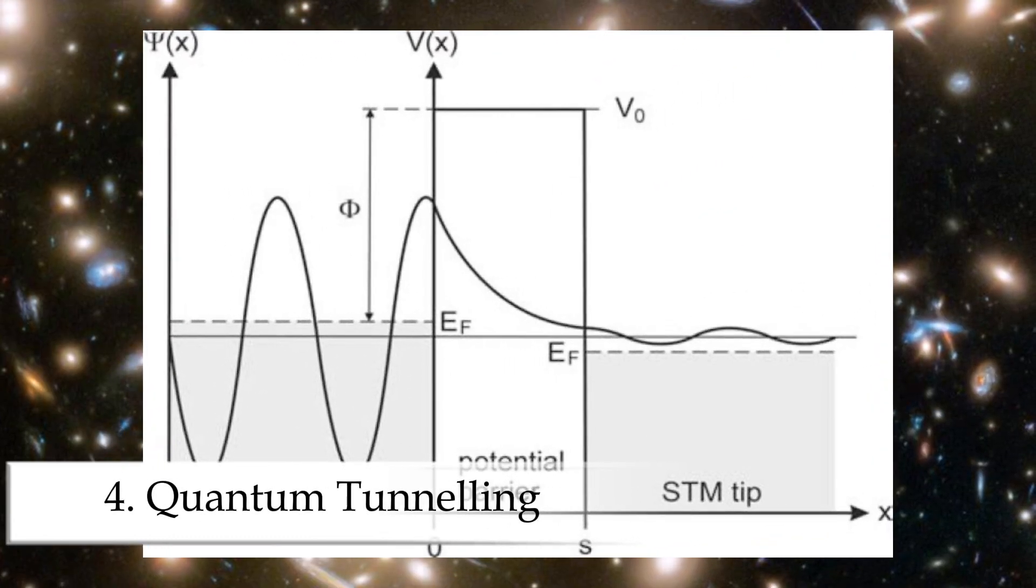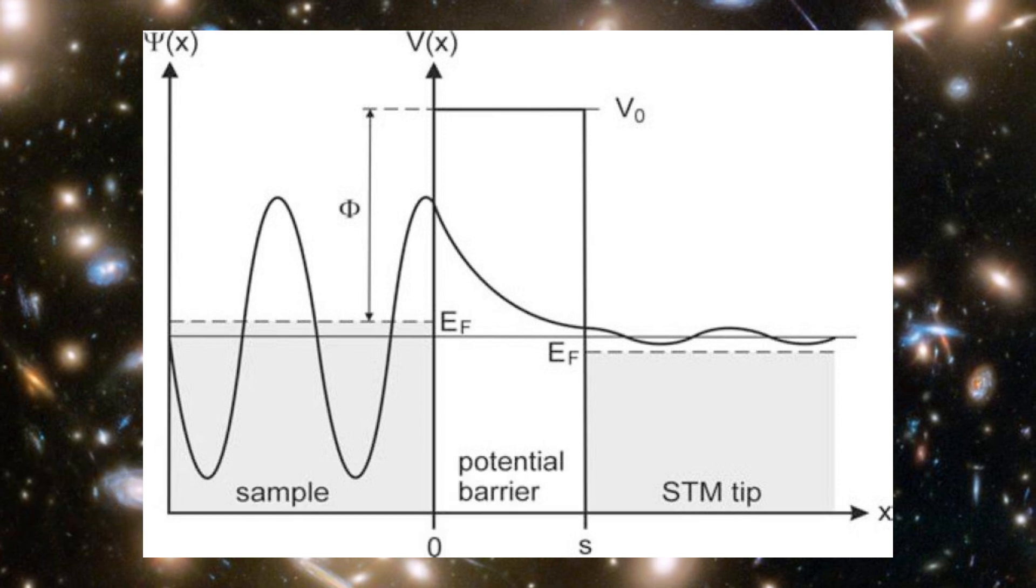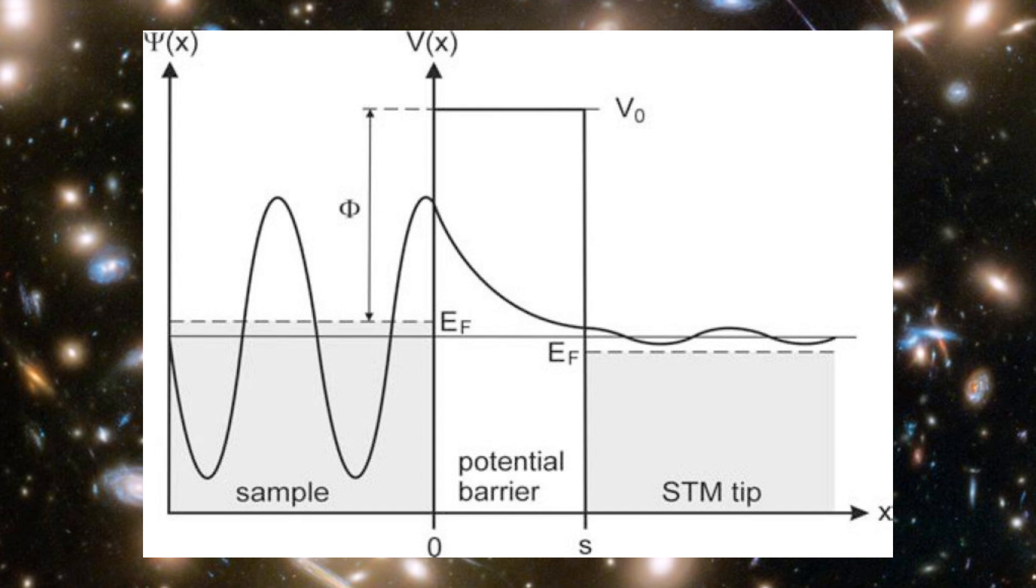Number four, quantum tunneling. In classical physics, if you throw a ball at a wall, it bounces off. In quantum physics, sometimes it just goes through.